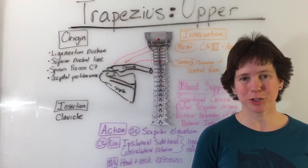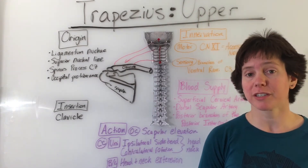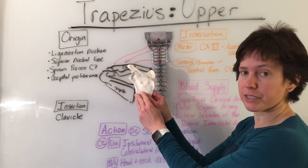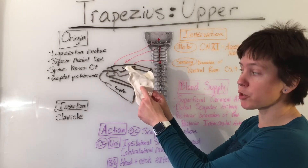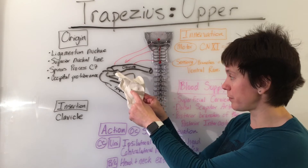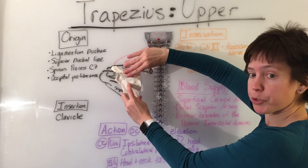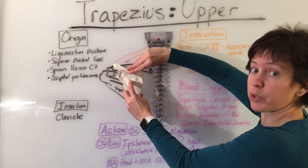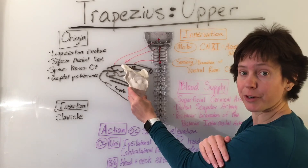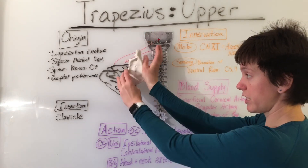The upper trapezius is responsible for open chain scapular elevation. On our scapula model, the center of rotation of the scapula is approximately where the star is. The upper trapezius produces an upward slide and upward rotation of the scapula, which together constitute scapular elevation.